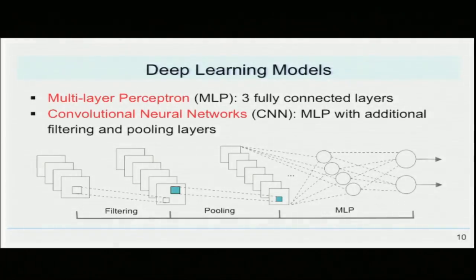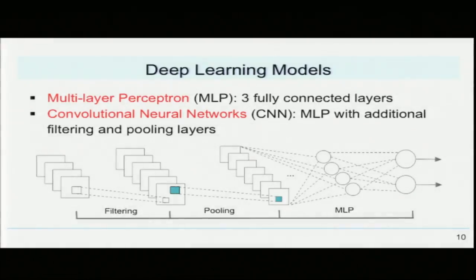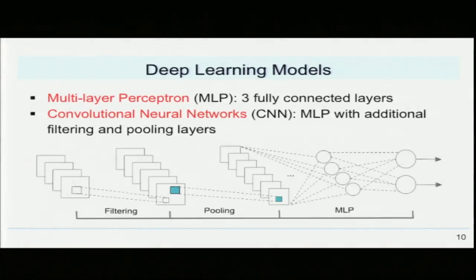The first deep learning model, the multi-layer perceptron, consists of three fully connected perceptron layers, where each layer passes down the most significant features to the layer beneath it. The convolutional neural network incorporates the multi-layer perceptron but also includes additional filtering and pooling layers that isolate the most significant features and reduce variation under translation. In practice, both deep learning models tend to perform better on larger datasets and may overfit on smaller ones.